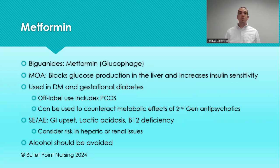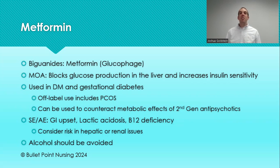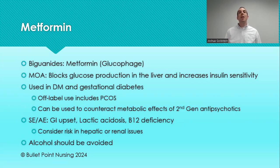Metformin is one of the few medications that directly reduces insulin resistance — or another way to say the same thing, it increases insulin sensitivity. It makes the cells more receptive to sugar and insulin entering the cell, thereby getting sugar out of the bloodstream and lowering blood sugar levels. That's why it's first-line — metformin is the gold standard medication to address insulin resistance.